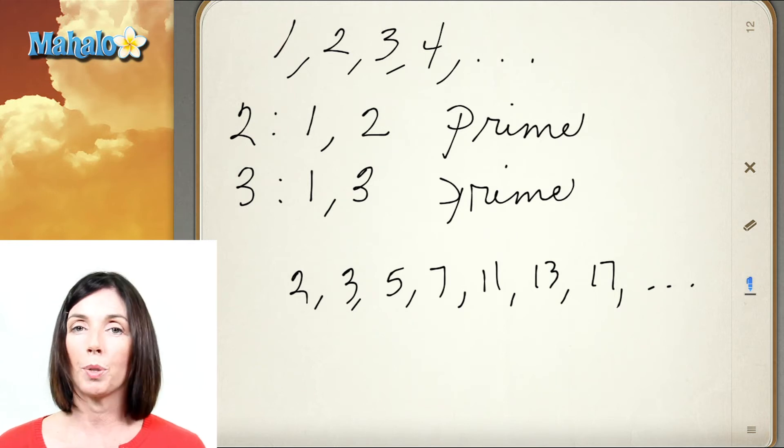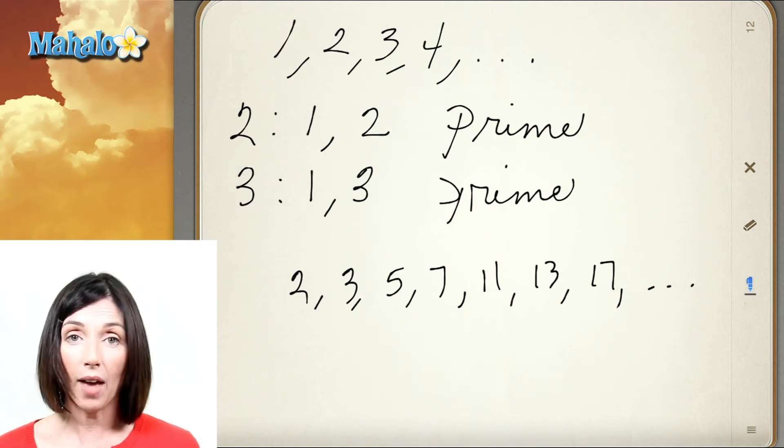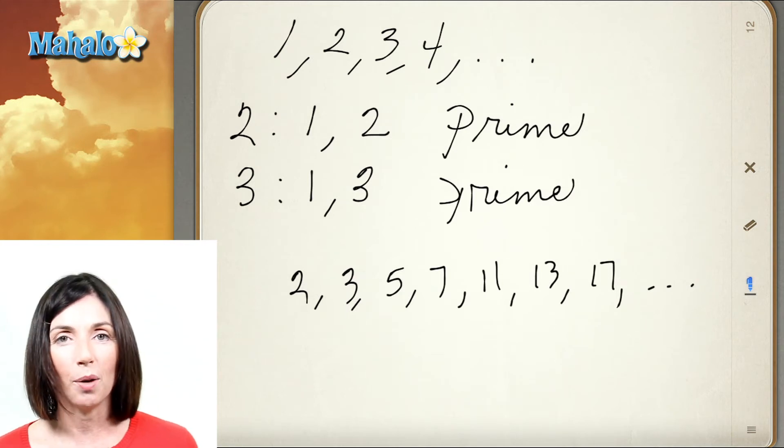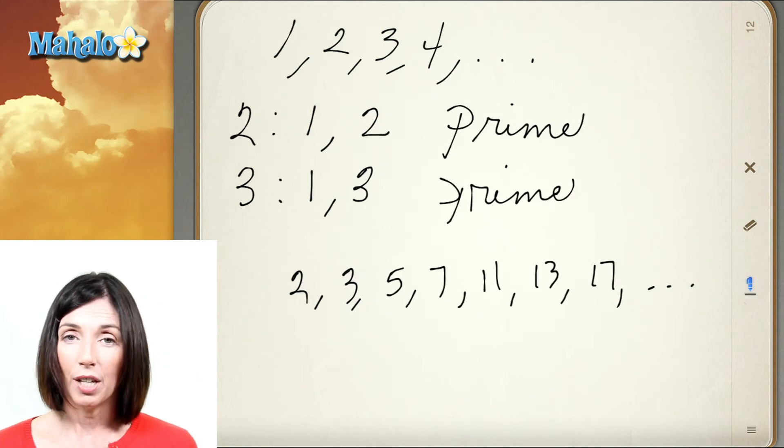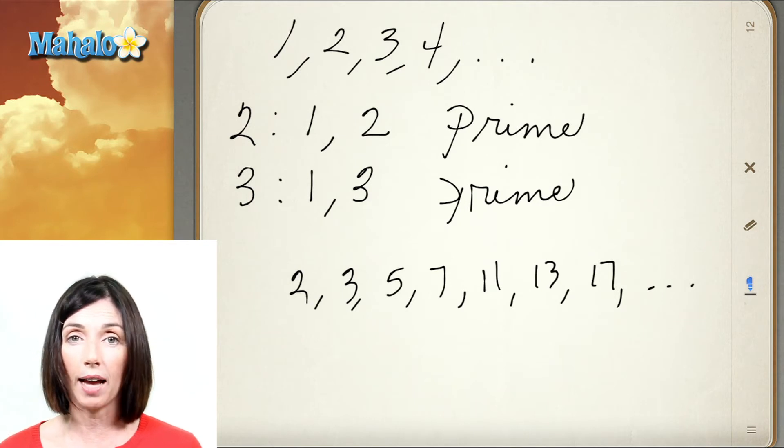Now, to determine if a number is prime, you have to find out if it has any factors besides one and itself. There's no real magic way to do that when you're dealing with large numbers. You just have to do some division and see if you can find a factor.